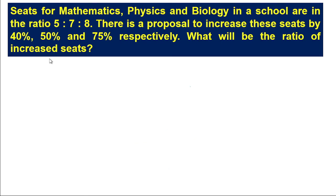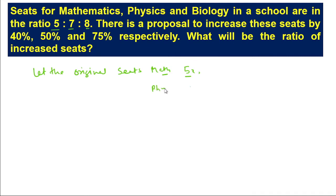Now let's start. For solving this type of problem, the given ratio is 5:7:8 for Mathematics, Physics and Biology. From here we can take the original seeds. Let the original seeds of Math be 5x, for Physics it will be 7x, and likewise for Biology it will be 8x.